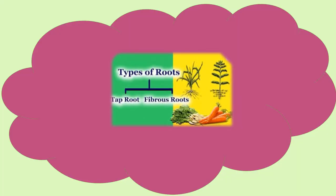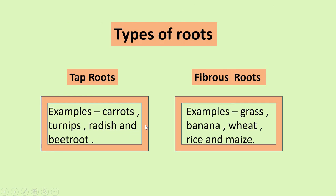Now, we will learn about the types of roots. There are basically two types of roots. Tap root and fibrous root. What are the examples of tap roots? Carrots, turnips, radish, and beetroot. You must be eating these things. Okay? Occasionally, you must be eating radish or beetroot. And fibrous roots. The examples are grass, banana, wheat, rice, and maize.